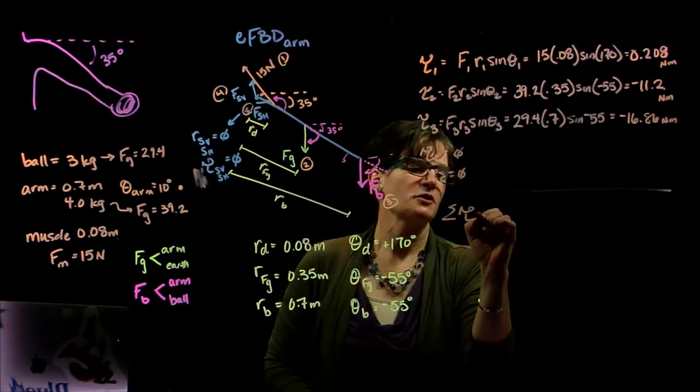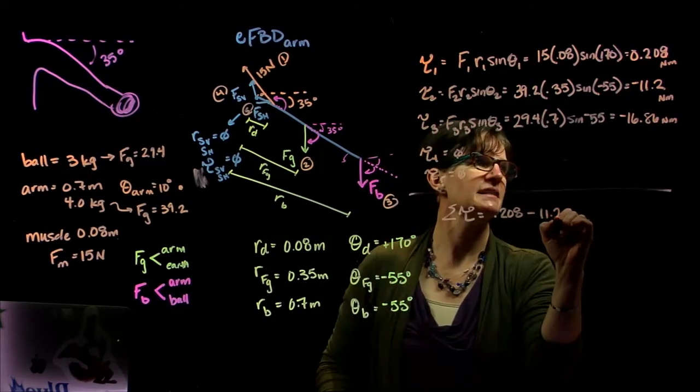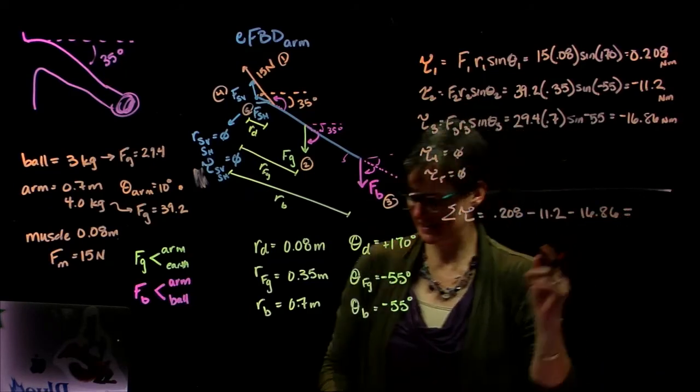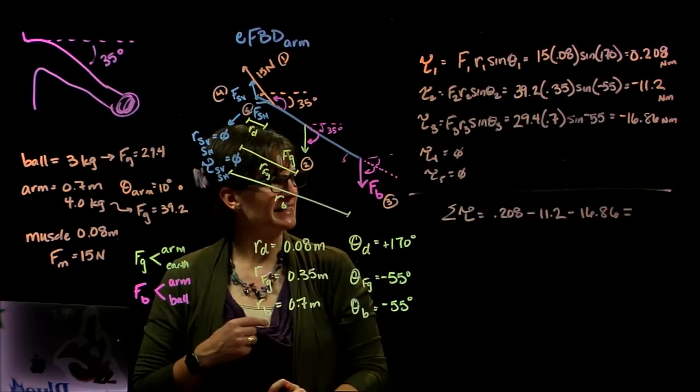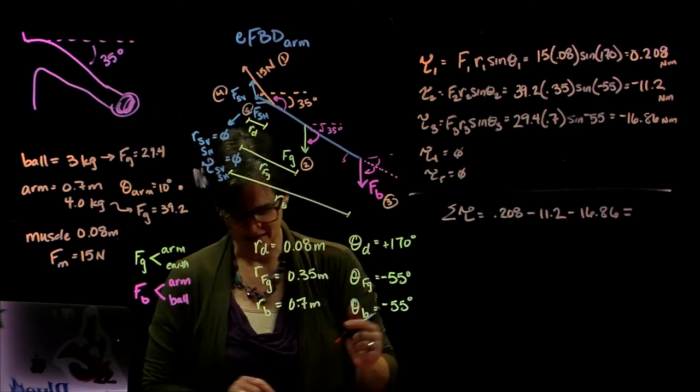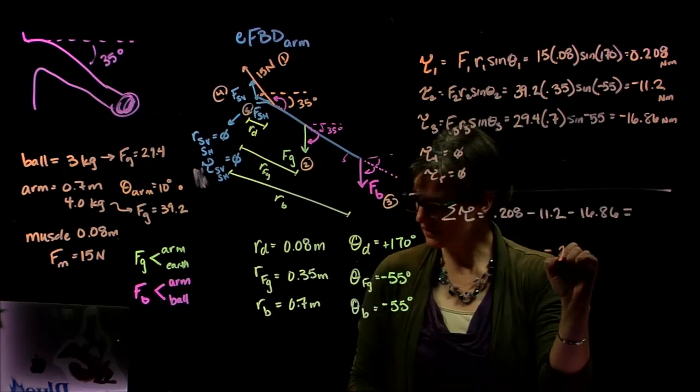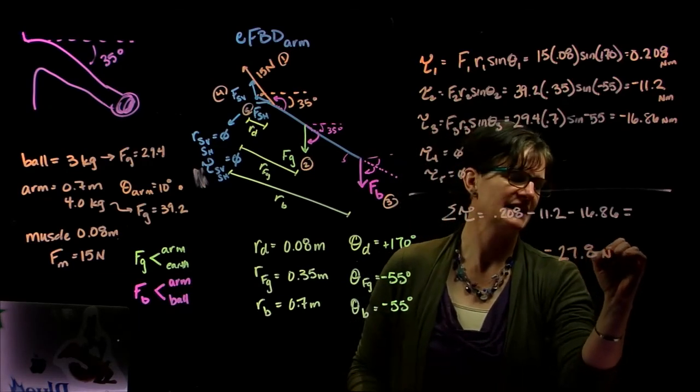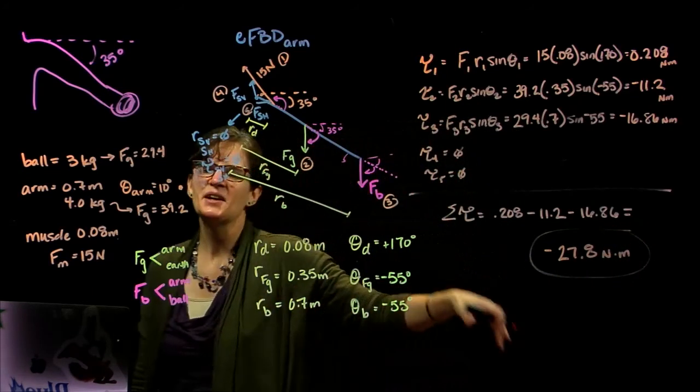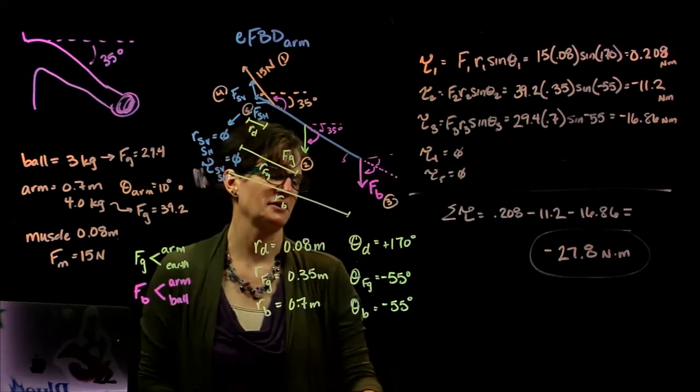So the sum of our torques is 0.208, that poor deltoid muscle isn't doing a whole lot, is it? Minus 11.2 minus 16.86. So 16.86 plus 11.2 minus 0.208, we get a net torque of negative 27.8 newton meters. So that deltoid muscle is relaxing, causing the arm to rotate in the clockwise direction.